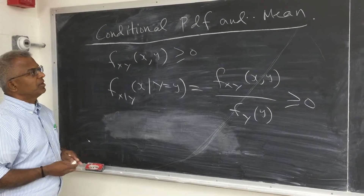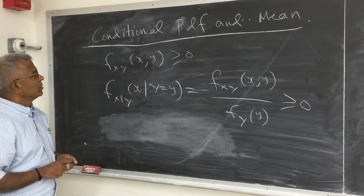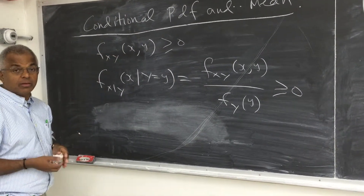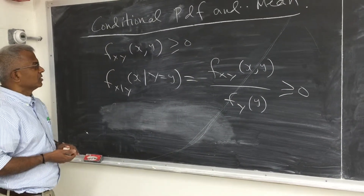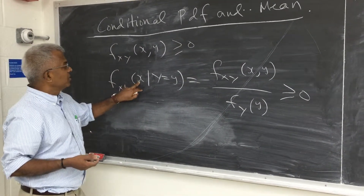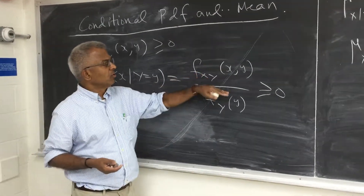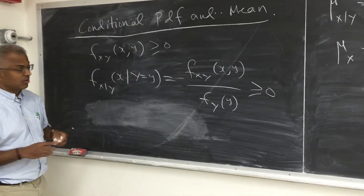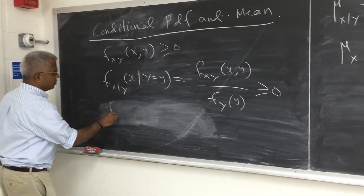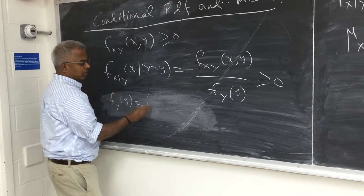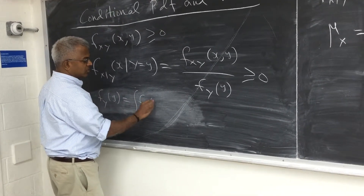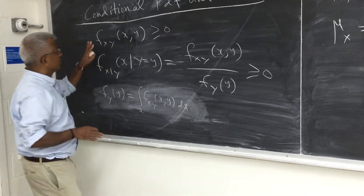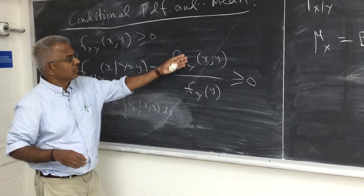Let me talk about the conditional PDF and conditional mean. We have two random variables in general — they may not be independent — so you have the joint density function. The conditional density function of X given Y is the ratio of the joint density function divided by the marginal density function of Y. F(Y) is obtained by integrating out X from the joint density function, and you plug it in here.